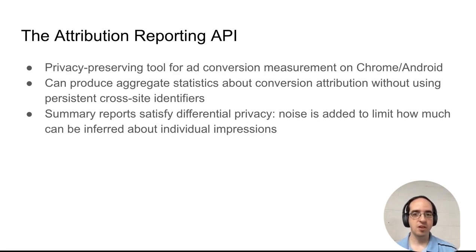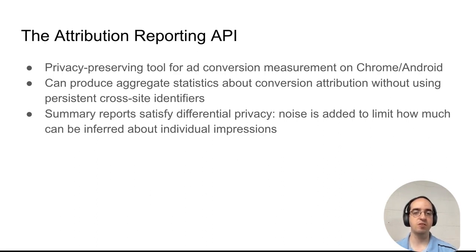The summary reports satisfy differential privacy, so noise is added to limit how much can be inferred about individual impressions, where the level of noise and resulting privacy guarantee are controlled by a parameter epsilon.